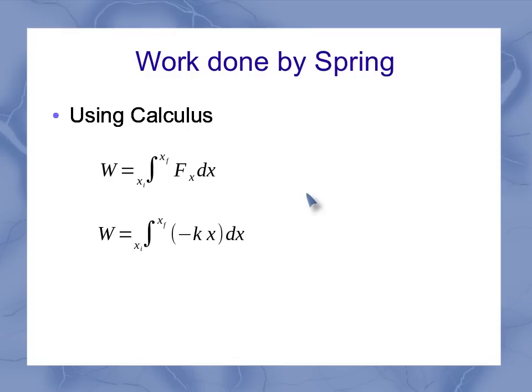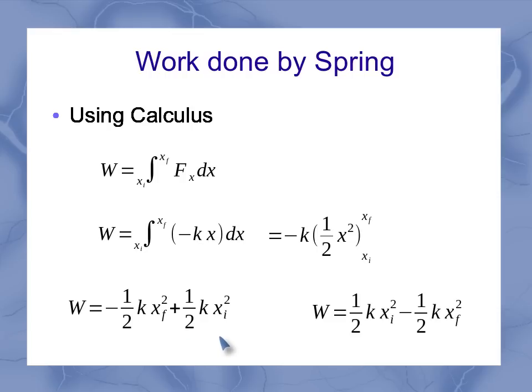Plugging in my specific force of the minus kx, I've got this integral here. Now the minus k are constants, so they can pull out front, leaving me with the integral of x dx, which is 1 half x squared. And I still have to evaluate it over my limits. Evaluating it over the limits, I've got minus 1 half kx final squared, plus a 1 half kx initial squared. And again, rearranging my terms, I get the exact same thing I saw when I looked at the area graphically.